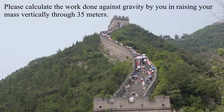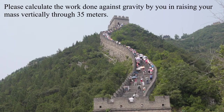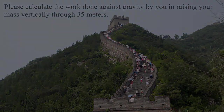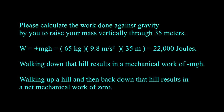Please calculate the work done against gravity by you in raising your mass vertically through 35 meters. For a mass of 65 kilograms (140 pounds), work equals plus mgh equals 65 kg times 9.8 m/s² times 35 m equals 22,000 joules. Walking down that hill results in mechanical work of minus mgh. Walking up and then back down the hill results in a net mechanical work of zero.